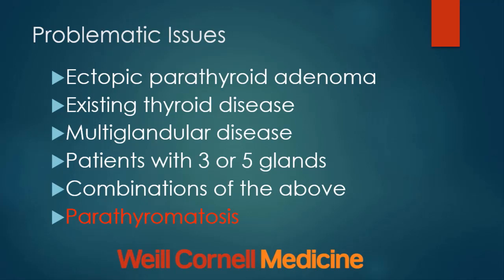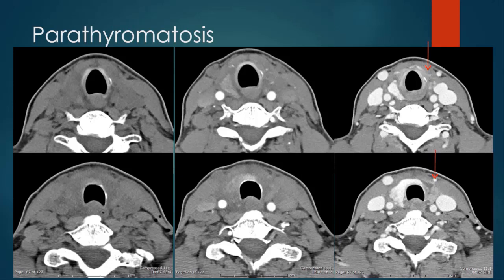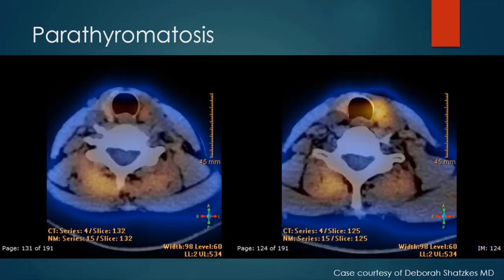Parathyromatosis is an unusual condition. It was initially described in patients who had parathyroid carcinoma who essentially seeded the thyroid bed, and has also been described in patients who have undergone resections of benign adenomas. This patient, following resection of parathyroid tissue, had elevated parathyroid hormone levels, and on subsequent follow-up 4D CT showed multiple nodular foci of enhancement within the left hemithyroidectomy bed. A sestamibi exam demonstrated increased uptake in this region, and surgically multiple nodules of parathyroid tissue were excised. This is parathyromatosis.